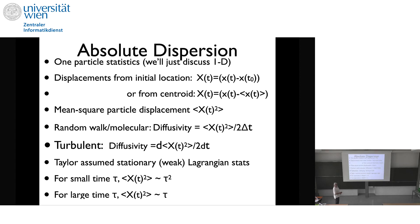Taylor assumes stationary, weak Lagrangian statistics. For small time, the mean square displacement is proportional to t² (proportional to t minus t-naught squared). For large time it becomes linear — the mean square displacement has a linear shape.